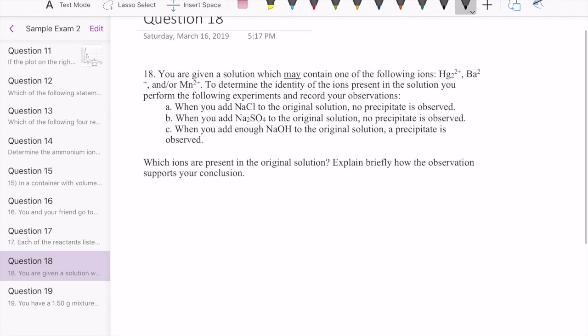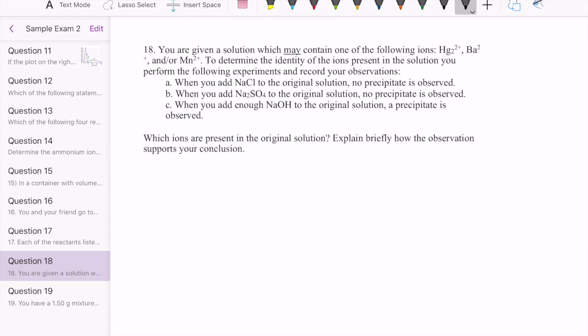Okay, let's take a look at sample exam 2, Chem 11, number 18. This question gives us a solution and it tells us that it may contain one of these ions. And so what we have to do is figure out which ions are present in our solution. So it could be one or more of those ions.